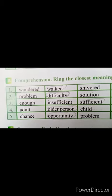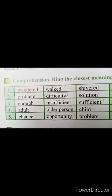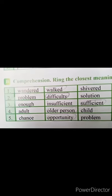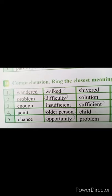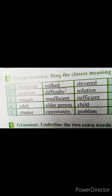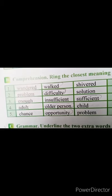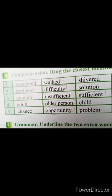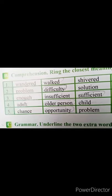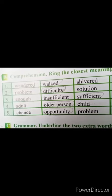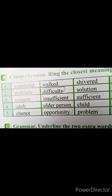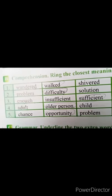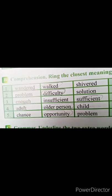Third one is 'enough'. Enough means کافی. Options: insufficient and sufficient. Insufficient کا مطلب ہے ناکافی، sufficient کا مطلب ہے کافی — تو enough اور sufficient کا ایک ہی مطلب ہے. ہم sufficient کو circle کریں گے. Fourth one is 'adult'. Adult means جوان. Options: older person and child. Child کہتے ہیں بچے کو — older person جو شخص ہوتا ہے — تو ہم older person کو circle کریں گے.